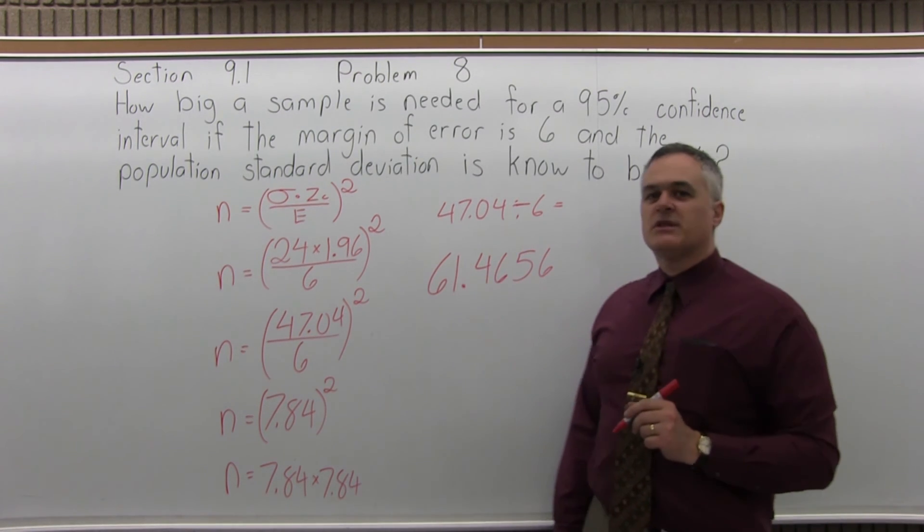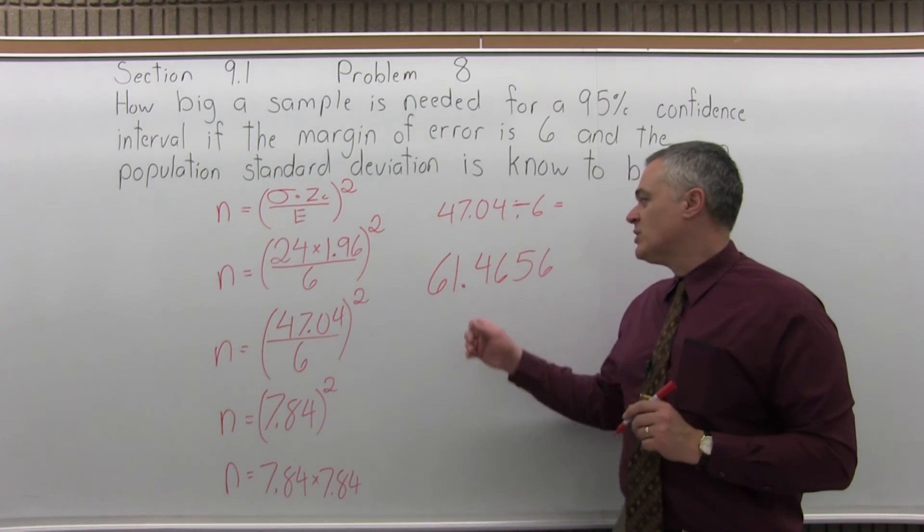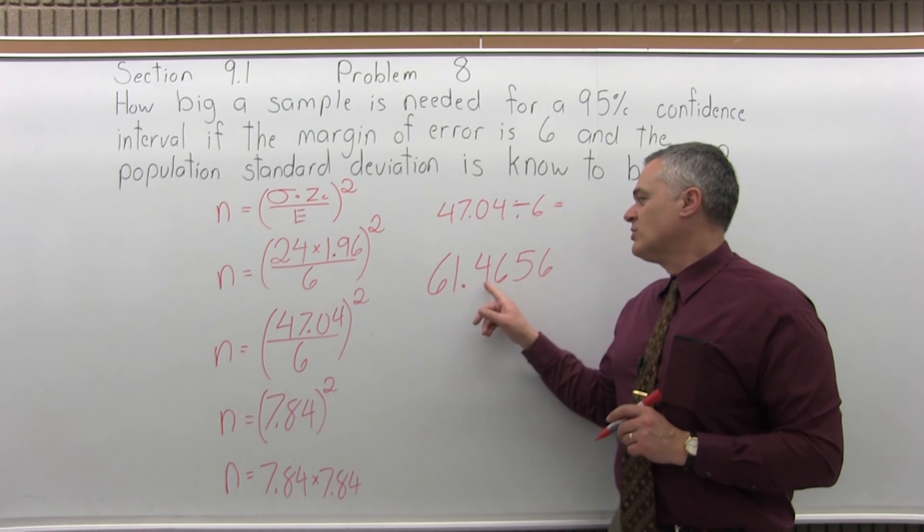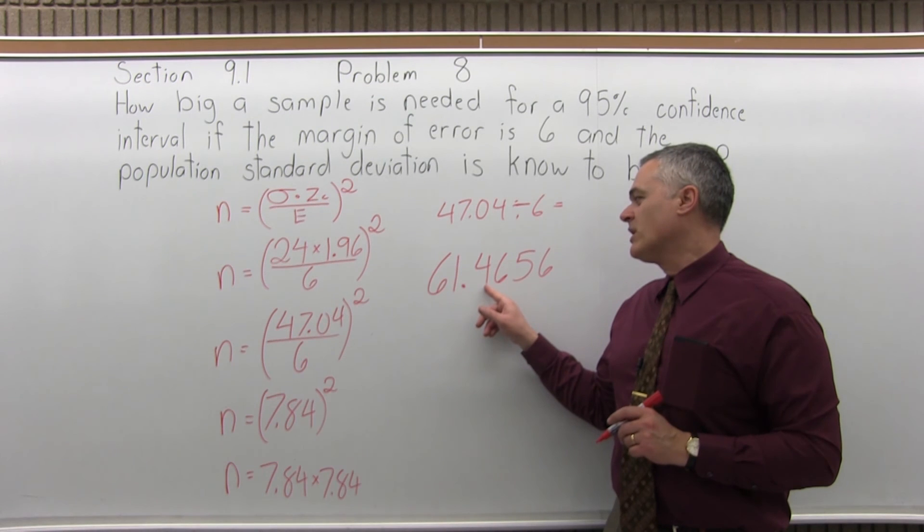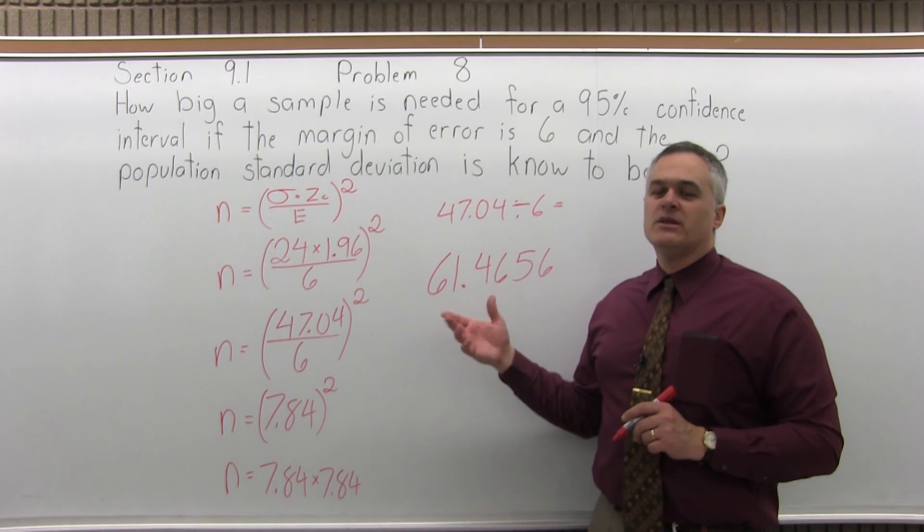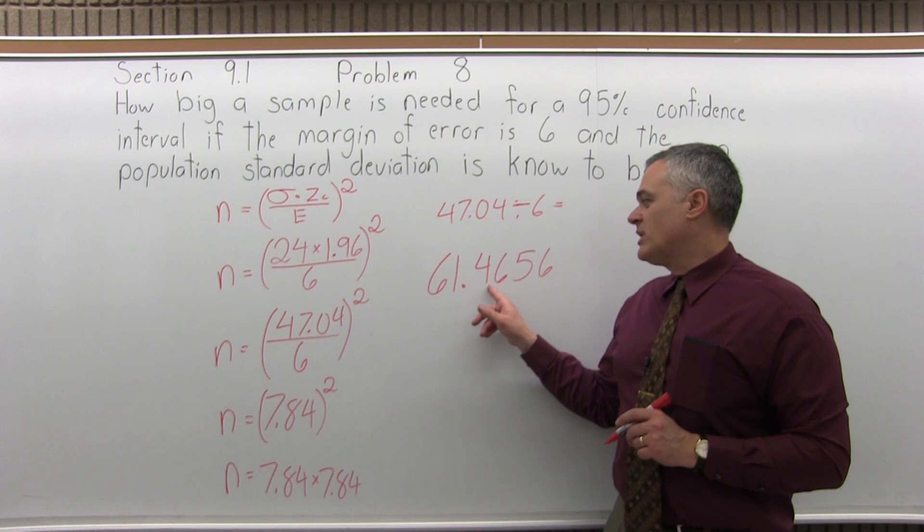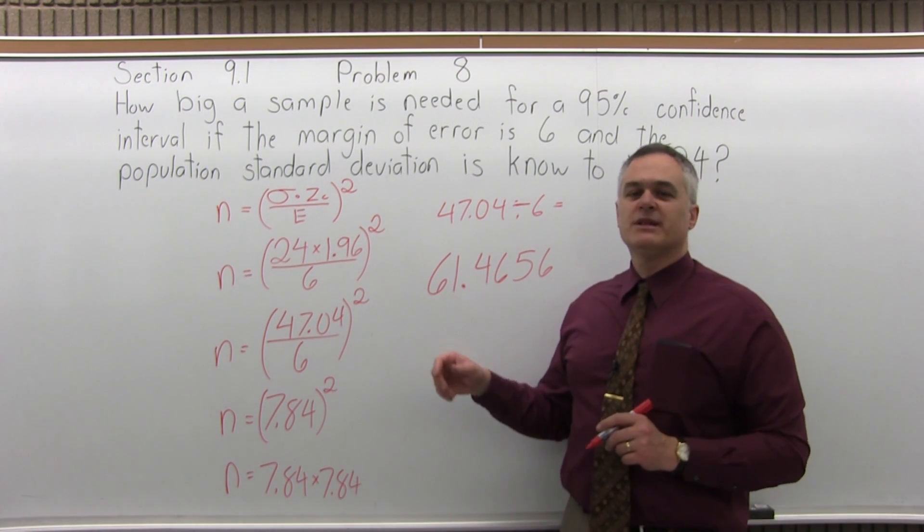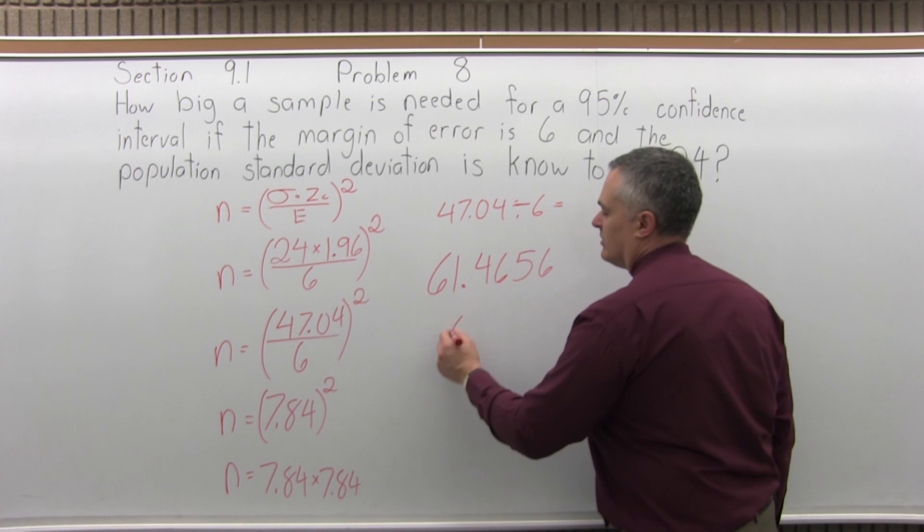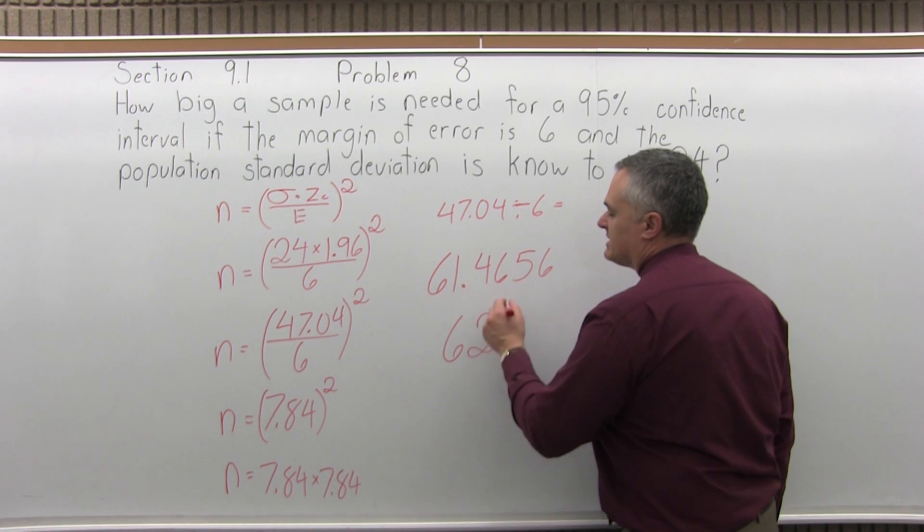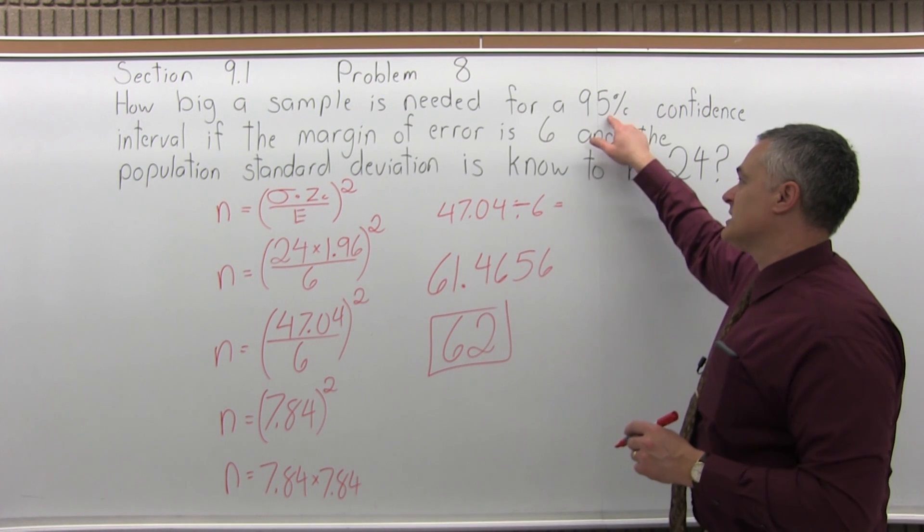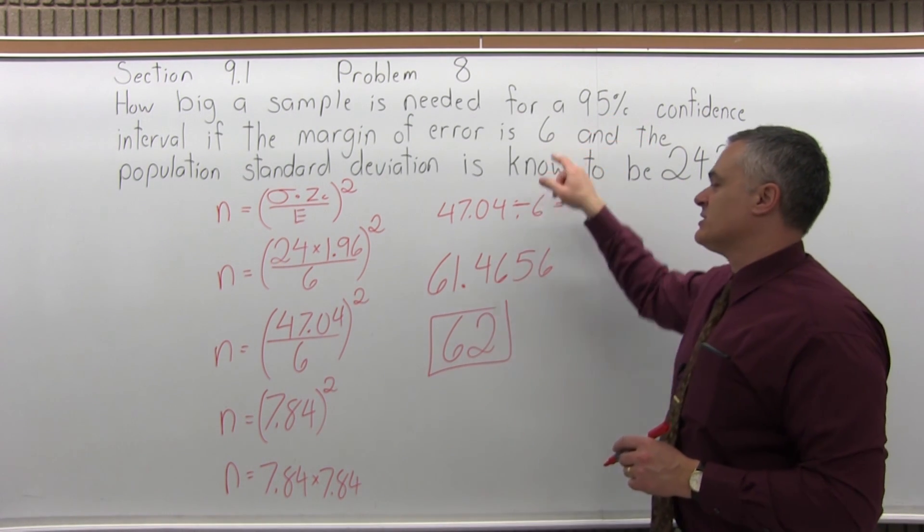Now the rule for determining the sample size says when it doesn't come out to a whole number, always round up. Without that special rule, the 61.4 would round to 61. But to keep accuracy as high as you want, the explanation in the note says no matter what the decimal is, round it up. So 62. So if you have a sample of 62, you would have that level of accuracy you want. 95% level of confidence with a margin of error of 6.